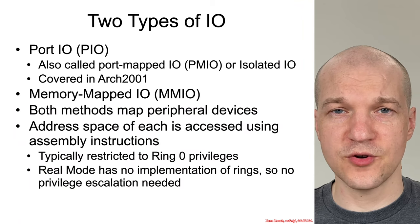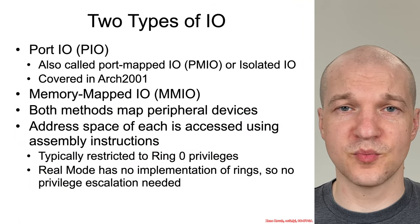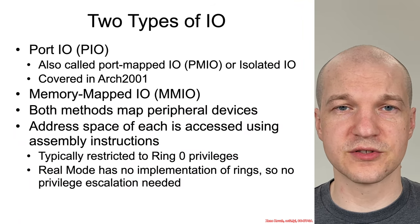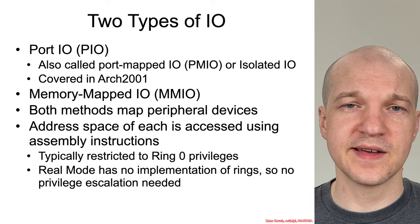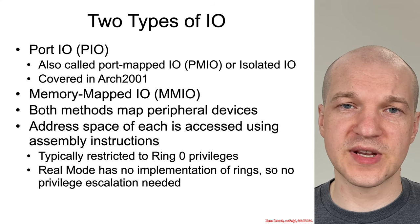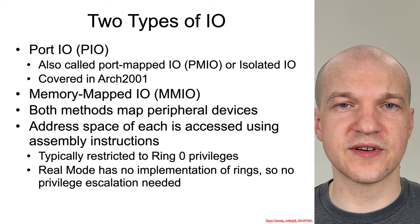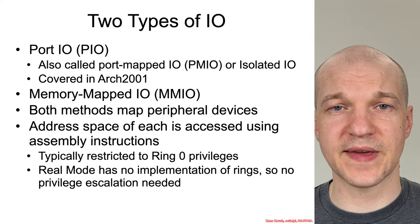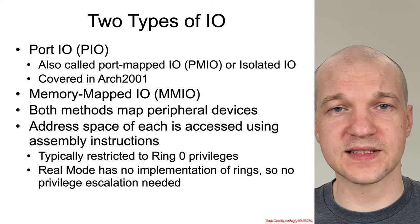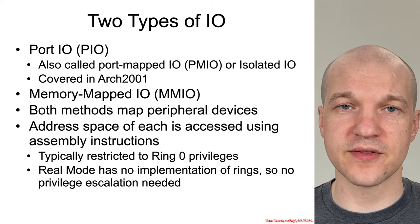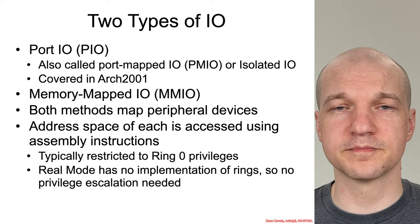Memory mapped I/O is one of the two types of I/O — port I/O, which we saw in Architecture 2001, and memory mapped I/O. Fundamentally, what you're doing when you're doing either of these types of I/O is you're accessing something other than the CPU, something other than RAM — at least your normal DRAM that you think of.